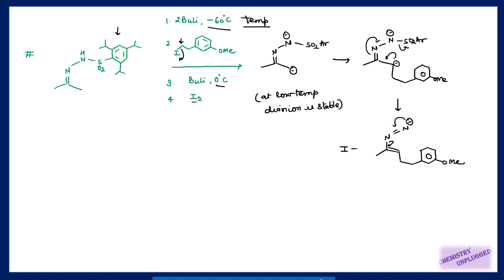In the next step, butyl lithium is used again at slightly higher temperature, creating another dianion. Now the reaction proceeds as usual: this bond shifts, the charge shifts here, this shifts here, and this group is removed. Then this charge shifts again, and this carbon with a negative charge attacks iodine to give the iodide product. The reason for using the 2,4,6-triisopropylsulfonyl (Tricil) hydrazone is to avoid ortholithiation — a side reaction where the alkyl lithium reacts at the ortho position of the aryl ring, since sulfur has lone pairs that can direct electrophiles to the ortho position.